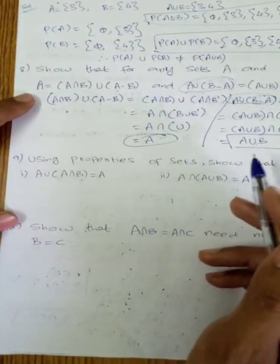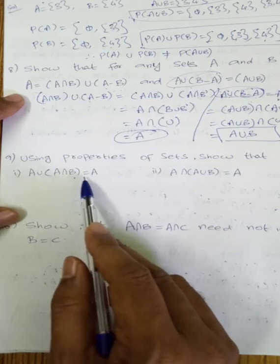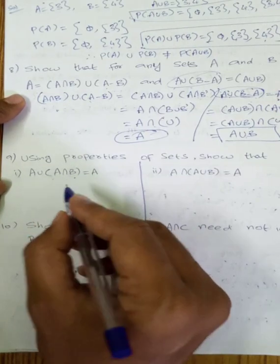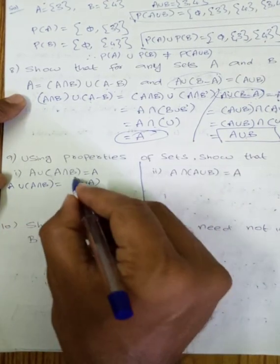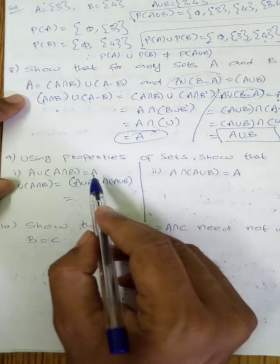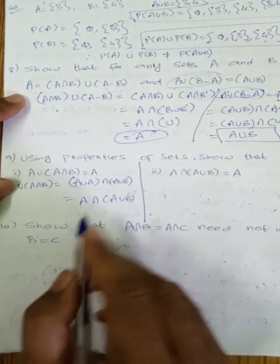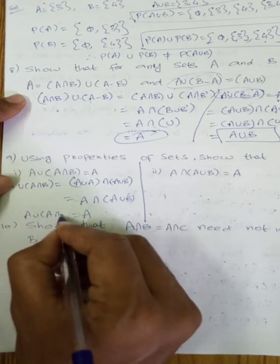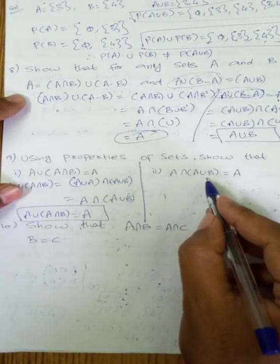Next is the 9th question. Using properties of sets, show that A union (A intersection B) is equal to A. So first, A union (A intersection B) equals A.